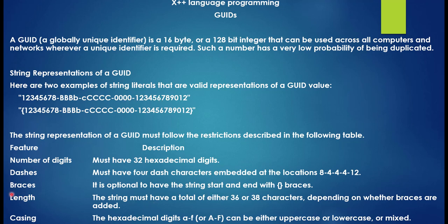Braces are optional — the string can start with a curly brace, as you can see in this example. The length of the string must be either 36 or 38 characters, depending on whether braces are added. If braces are not added, the total should be 36 characters; if braces are added, the length should be 38 characters.